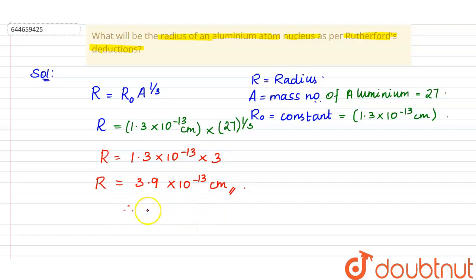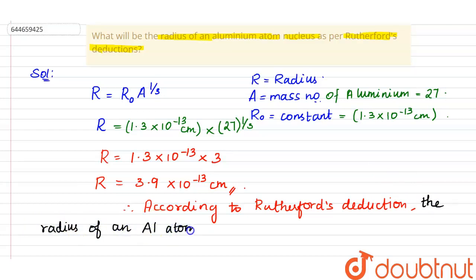So therefore according to Rutherford's deduction, the radius of an aluminium atom nucleus is 3.9 × 10⁻¹³ centimeter. This is the answer. Thank you.